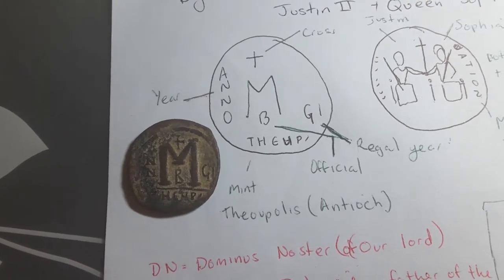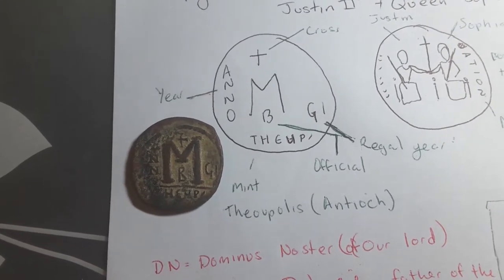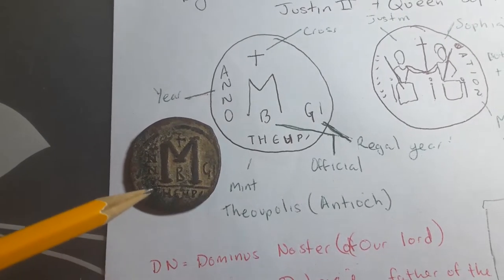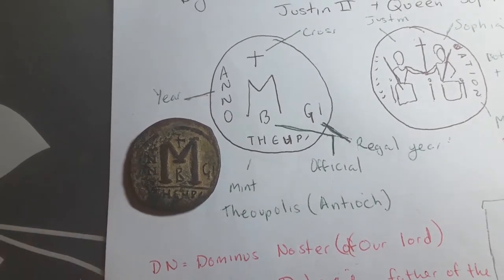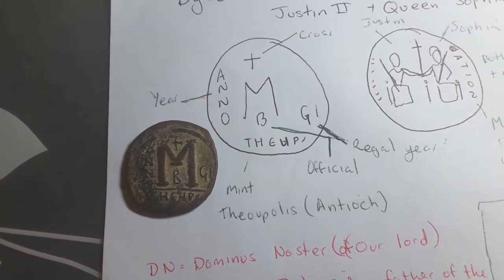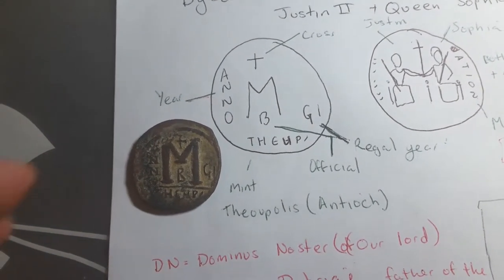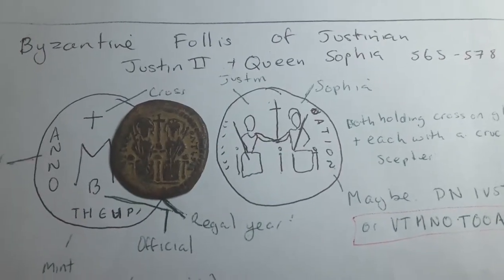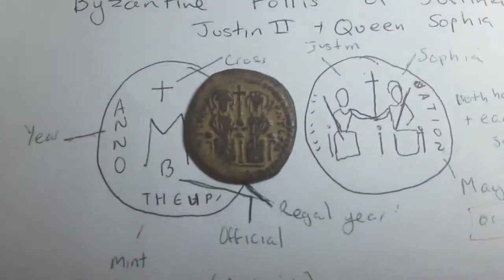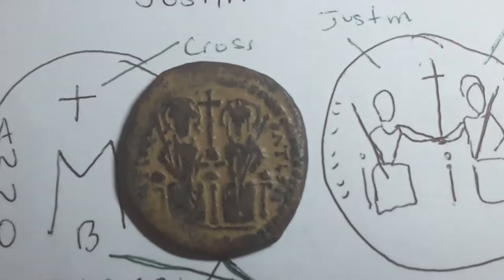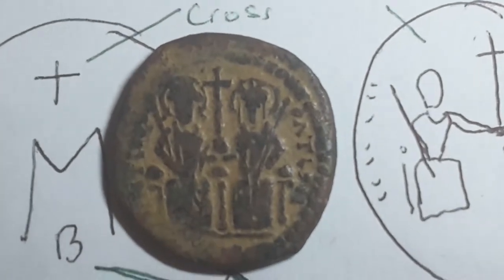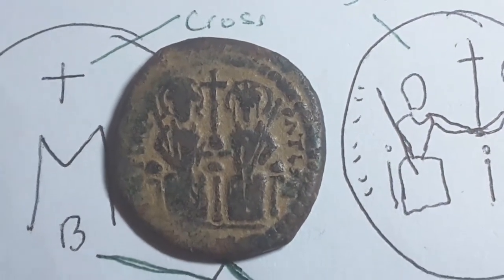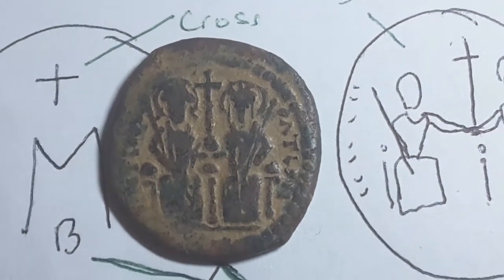The follis of later periods changes up until the 600s, and then the denomination on most of these is dropped. Here on the reverse, if you want to look close up - there you go.